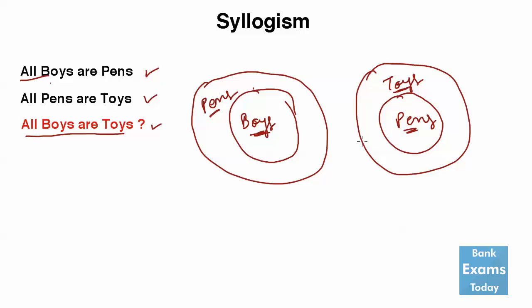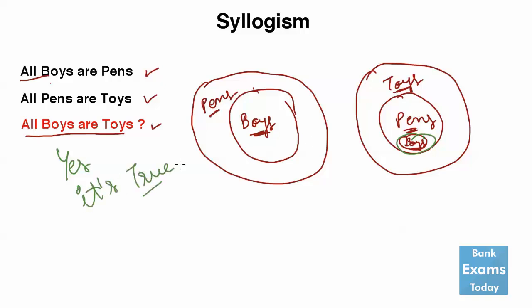So we can combine this. Boys is the smaller circle inside pens. So boys is here — this smaller circle — and that boys circle is a part of the bigger circle, toys. So yes, it's true. All boys are toys.